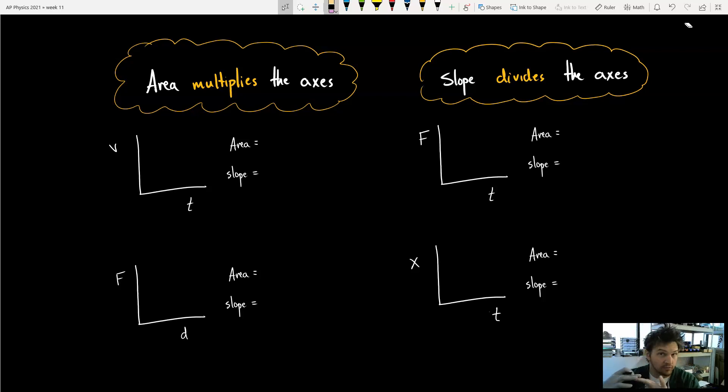The first is what does the graph just give you? If you just read the graph, what does it tell you? And then other things are, what does the area give you? What does the slope give you of that graph? Remember, the area simply multiplies the axes together.